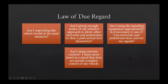Here's a breakdown of the law of due regard. Am I responding like others would in the same situation? Am I giving enough notice of my vehicle's approach to allow other motorists and pedestrians to clear a path? Am I using the signaling equipment appropriately — can motorists and pedestrians hear and see my signals? When operating in emergency mode with lights and sirens, you still have to use your turn signals and communicate your intentions. Am I using extreme caution? I must never travel at a speed that does not permit complete control of my vehicle — if you are not in control, you are in the wrong.